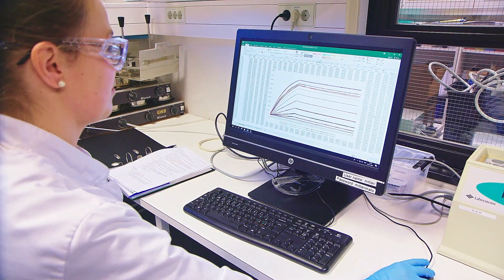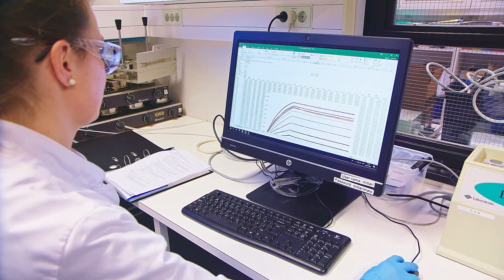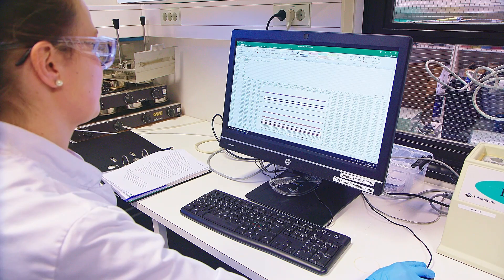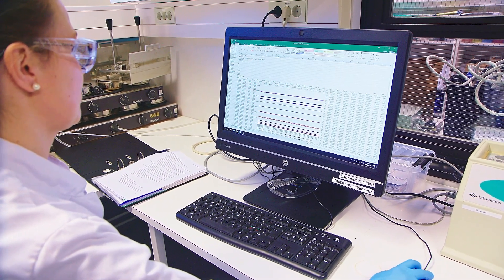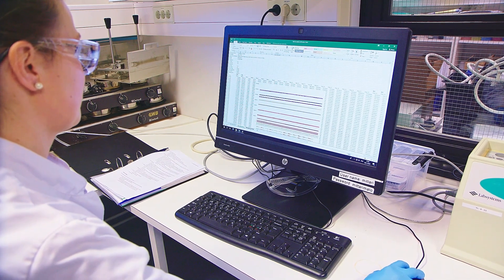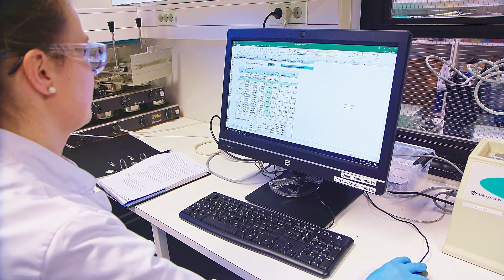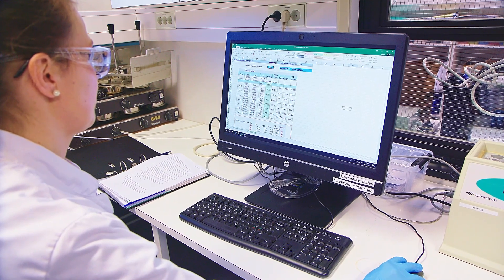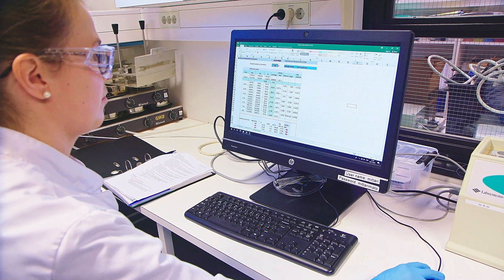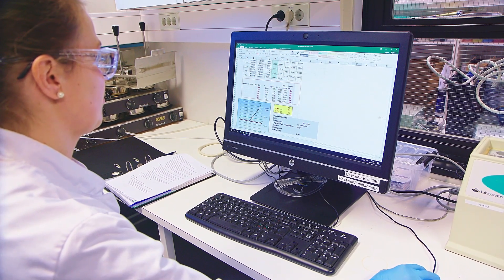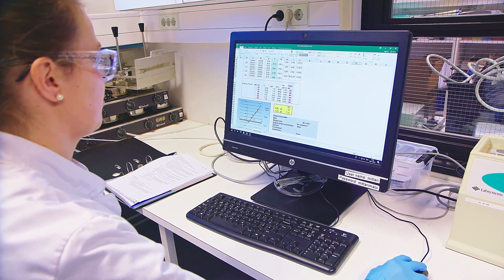The luminometer displays the results as light units. The inhibition percentage is calculated from the results, that is, the reduction in light output during the contact time compared to the starting point. The amount of light can change slightly in the control sample too due to natural reasons. This is taken into account using a correction factor calculated from the results of the control sample.